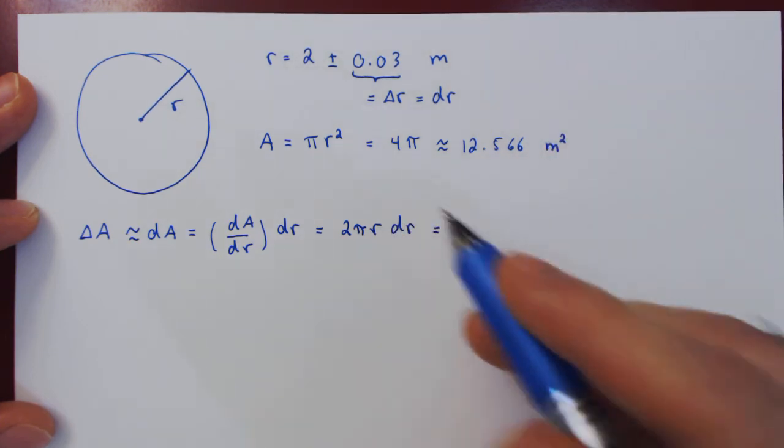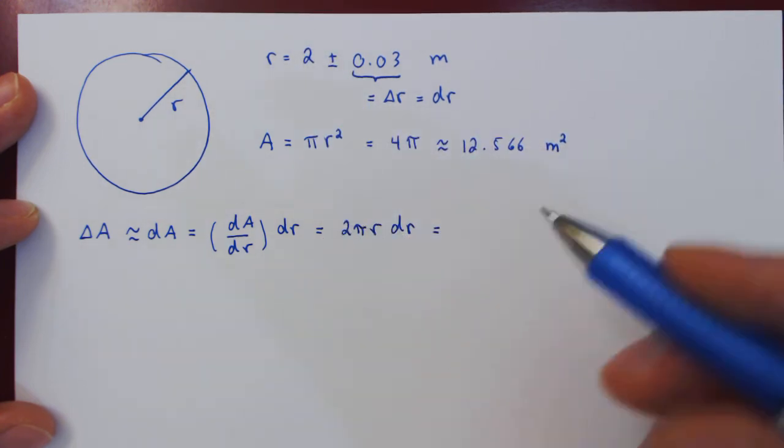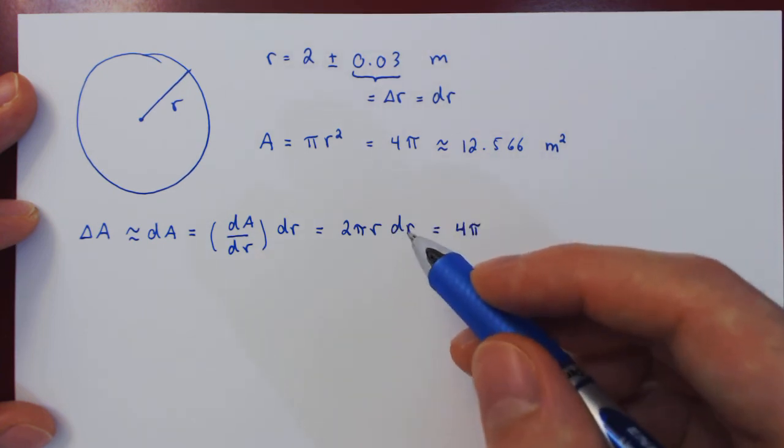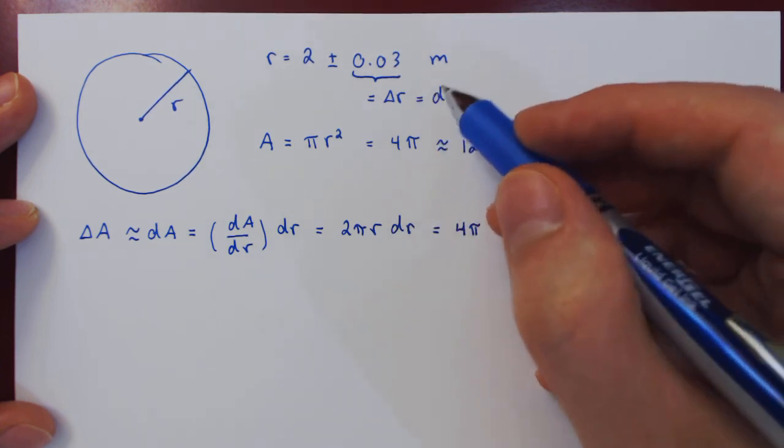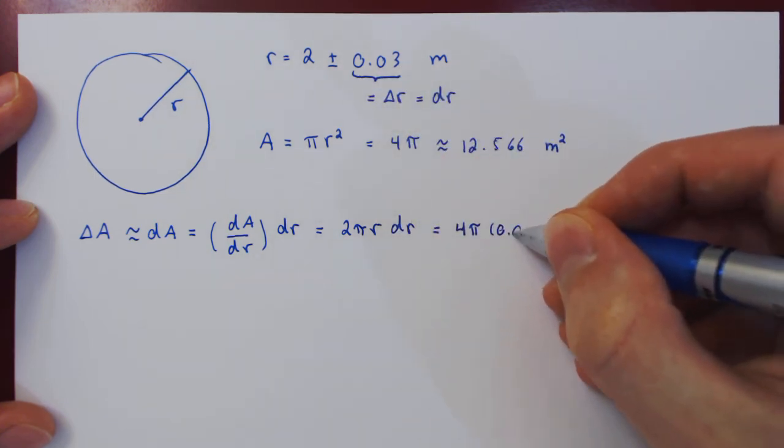The value of r is 2, so we have 2 times 2, 4 times pi, so 4 pi, times the differential in r, the change in r, which is the uncertainty, 0.03.